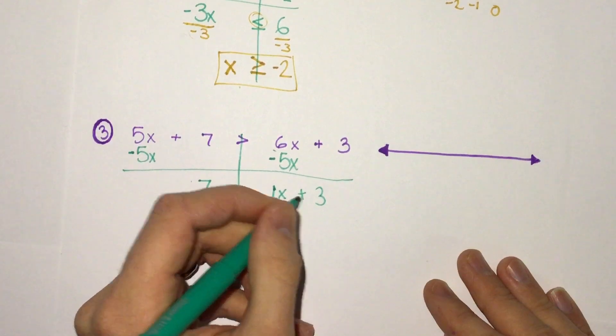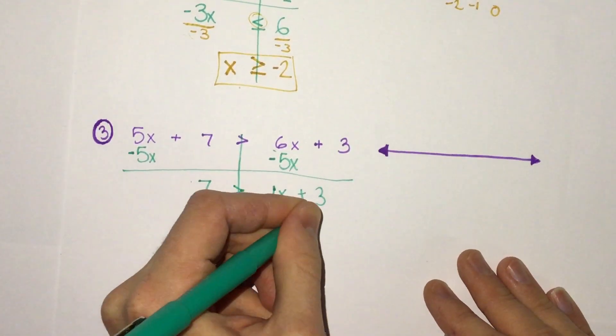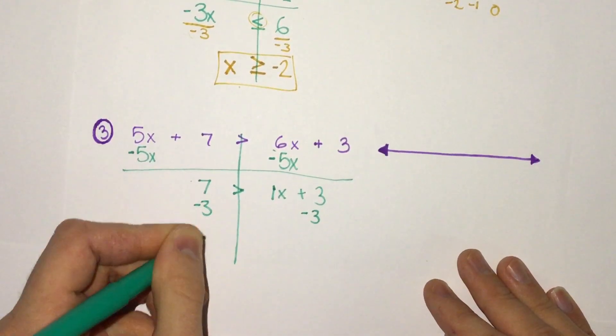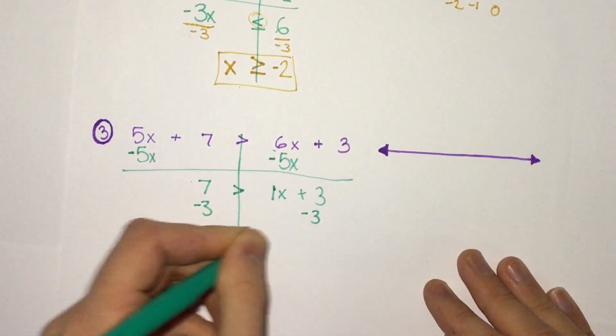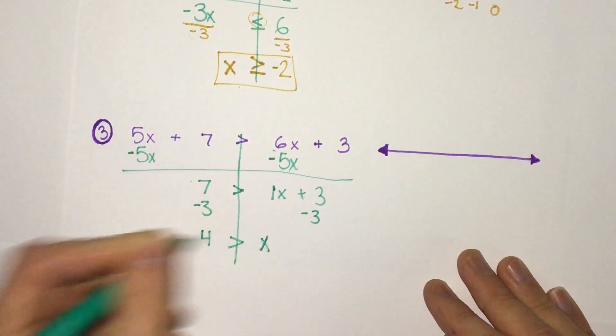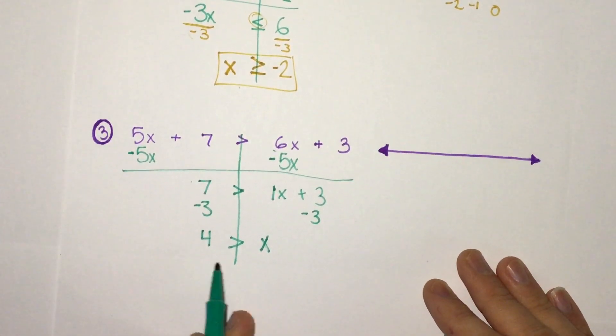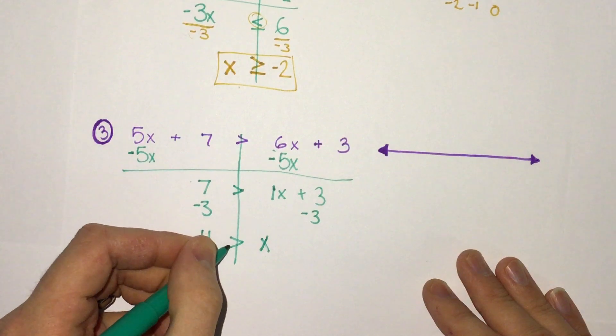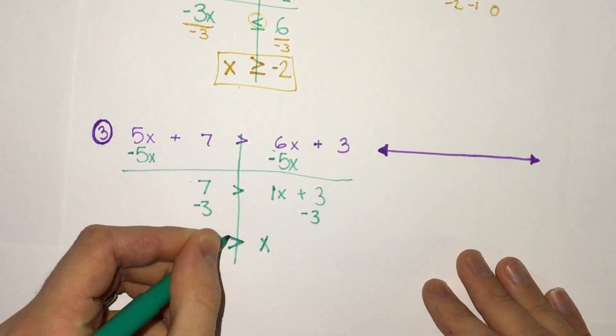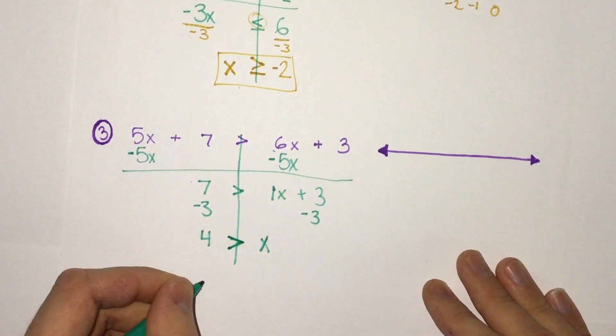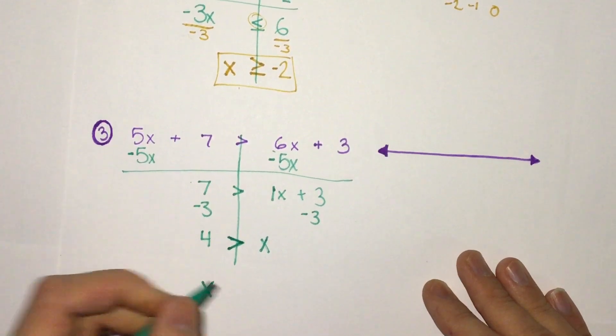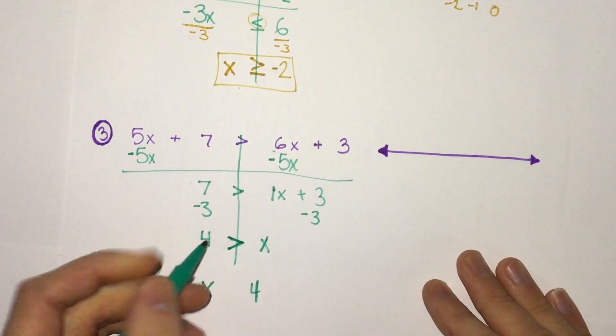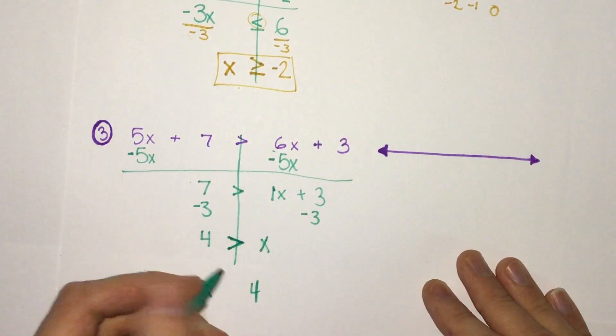Then we would subtract our 3 over. We get 4 is greater than 1x, or 4 is greater than x. Now this is backwards of what we normally have. Usually we have x on the left side. We can take this, look at what way the sign is opening to, and we can rewrite this with x on the left side, 4 on the right side. If we flipped them, we would just flip the signs. If 4 is greater than x, then x is less than 4.